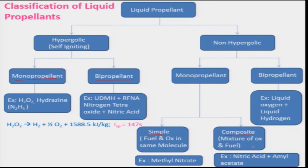The non-hypergolic bipropellant is being used very much; it is quite safe, easy to control, and can give a little higher ISP. The example is liquid oxygen and liquid hydrogen, which gives the highest specific impulse. Besides this, one can also use liquid oxygen and kerosene, and other propellants as fuel and oxidizer are being used profusely.